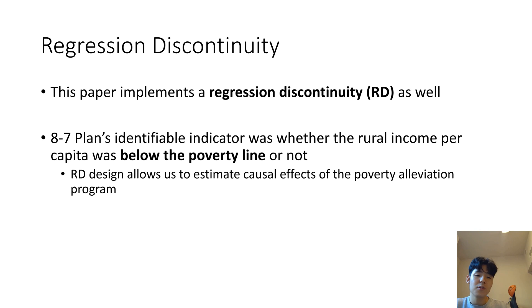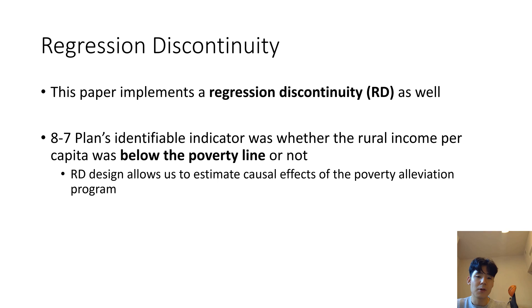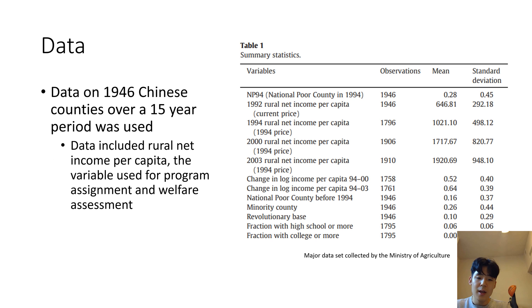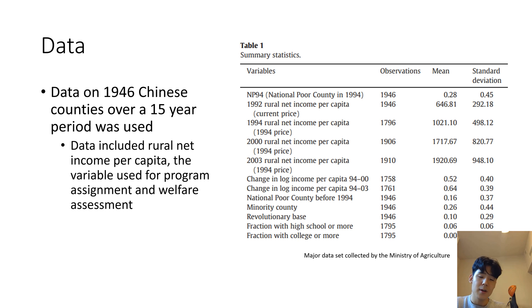The author also uses regression discontinuity, which allows us to estimate the causal effects of the poverty alleviation program. This is because the assignment of which county received this program treatment was not random. Instead, they used an indicator of whether or not the county's rural income per capita was below the poverty line or not. This data was collected by the Ministry of Agriculture over a 15-year period on every single Chinese county, and included the rural net income per capita compared to the established poverty line.